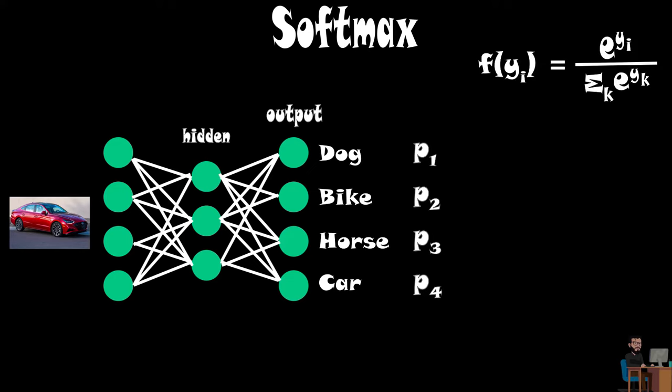Softmax uses this equation to calculate probability for a class, which is exponential of particular class over sum of exponential of each class. So if neural network produces these arbitrary outputs, we can use this function to convert it into corresponding probabilities.